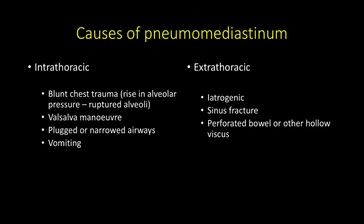The causes of pneumomediastinum can be divided into intrathoracic and extrathoracic. Blunt chest trauma is perhaps one of the commonest causes, where you get a sudden rise in intra-alveolar pressure leading to rupture of the alveolus. Valsalva's manoeuvre, plugged or narrowed airways, and vomiting, as in Boerhaave syndrome, can also lead to pneumomediastinum.